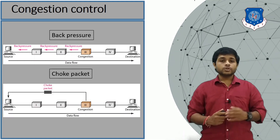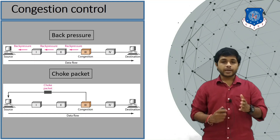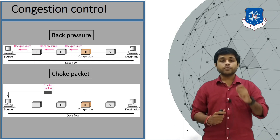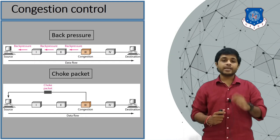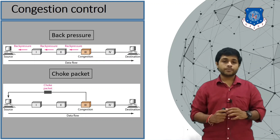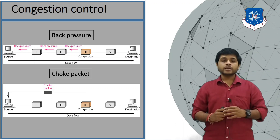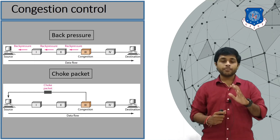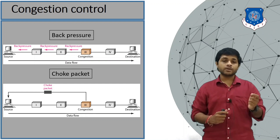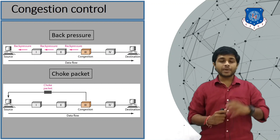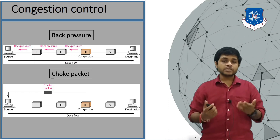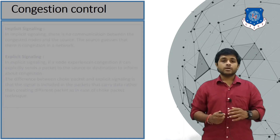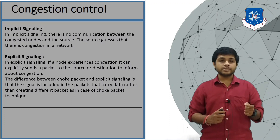The second type is the choke packet. The difference from back pressure is that the congested device does not stop receiving packets. Instead, device 3, which is congested, will generate a special message and send it to the source informing the sender that it is facing congestion and to please send data at a slower rate.